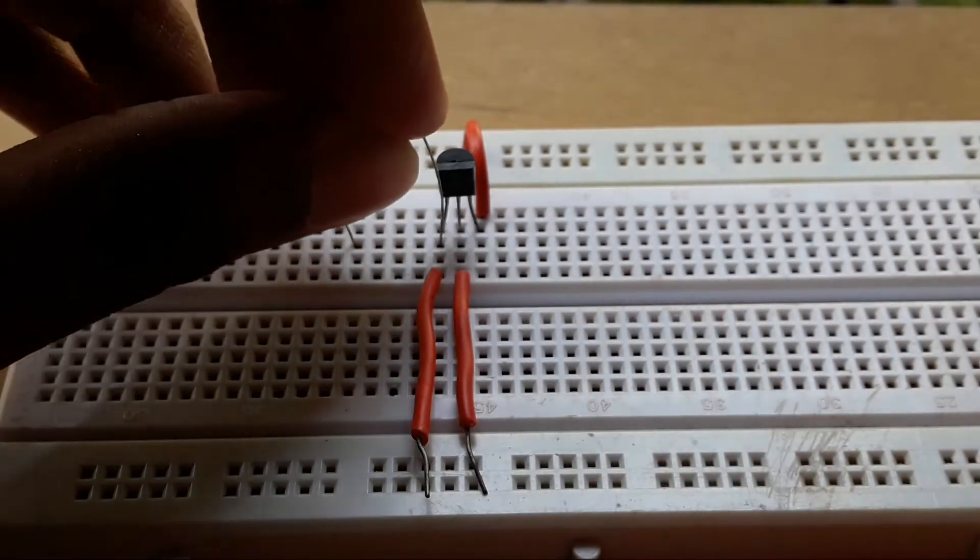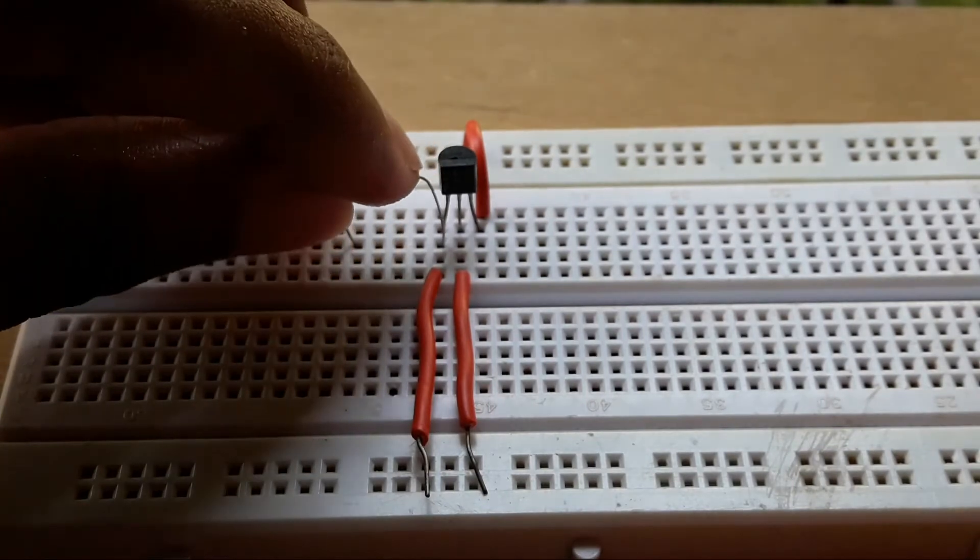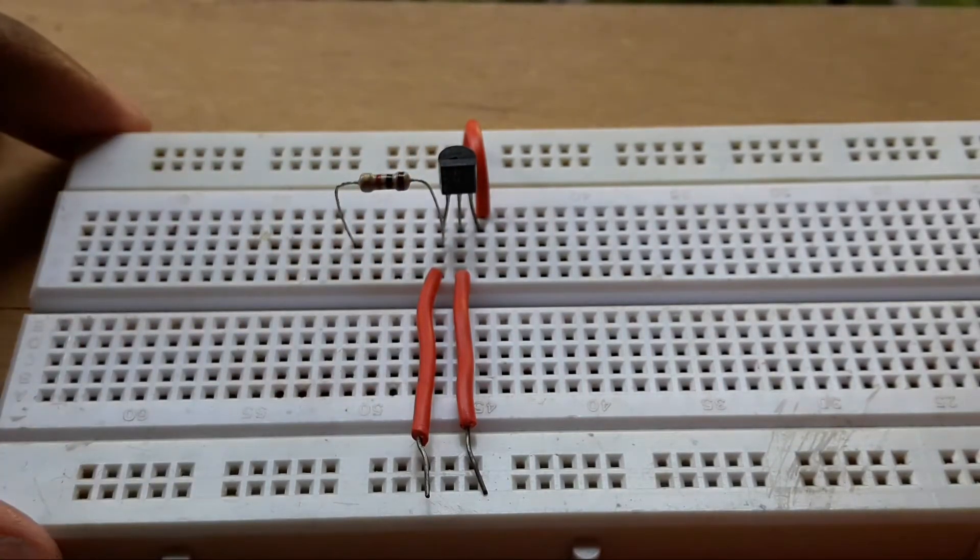Now take the 1K ohm resistor and connect it from the collector of the transistor to a blank space on the breadboard.